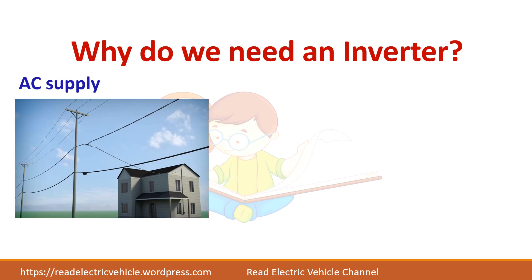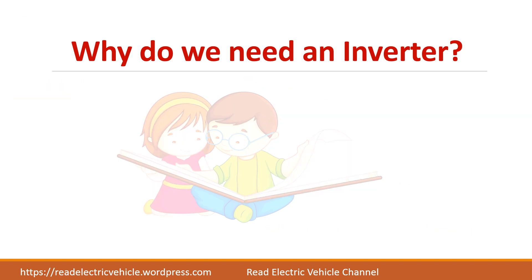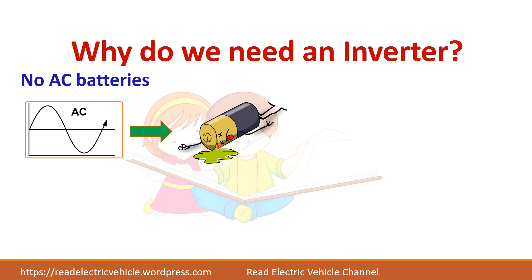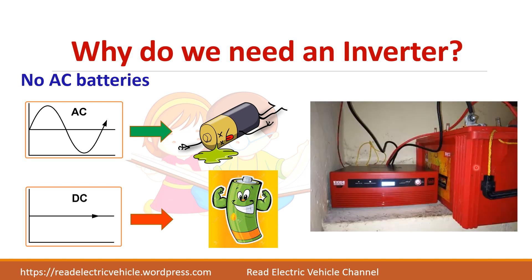Why do we need an inverter? In our house we get AC supply and when there is a power cut we suffer a lot. The reason behind this is we cannot store this AC power. So far there are no AC batteries to store the AC charge, but there are DC batteries which can store the DC charge. That is why we use a home inverter where when AC power is available we will store the charge in the DC batteries, and when there is no AC power this DC battery can be used to supply the AC loads.